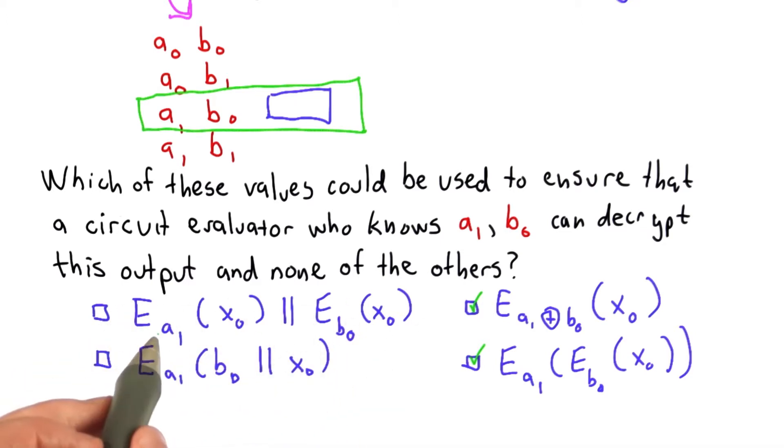This means if the evaluator is either a1 or b0, they would be able to learn the value of x0. That would enable the evaluator to decrypt more than one entry in this truth table if the other entries were encrypted the same way.